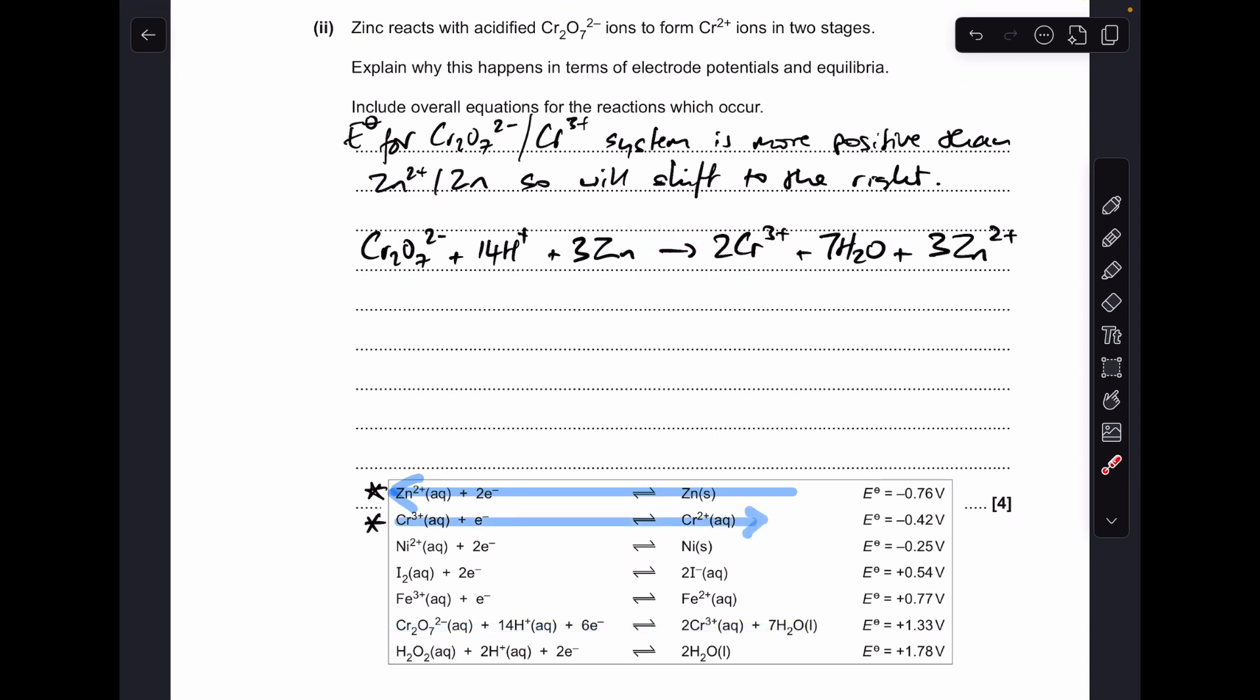And then you can see this equation has produced chromium 3 plus ions, which feature in this system here. So now we just need to do the same sort of thing. We're looking at the electrode potential values, and you can see that the chromium one is still the more positive one. And so therefore, this half equation shifts to the right, therefore this one shifts to the left. So there's the overall equation for step 2. You see we've got chromium 2 plus produced there, and I've had to double the chromium half equation because of the electrons.